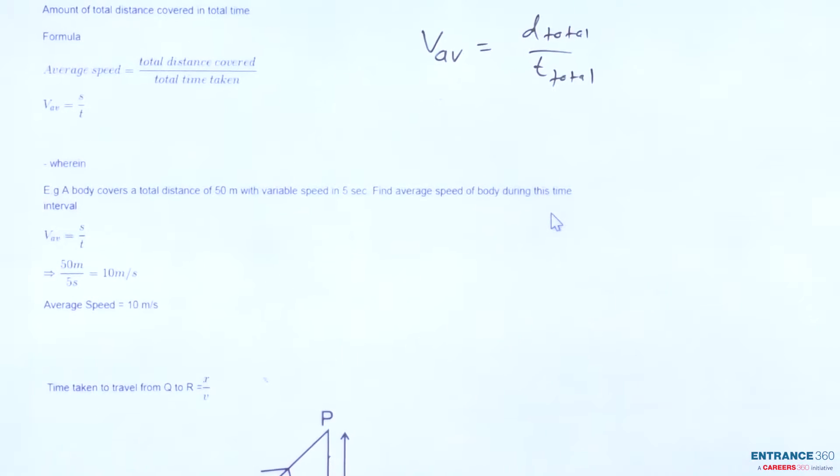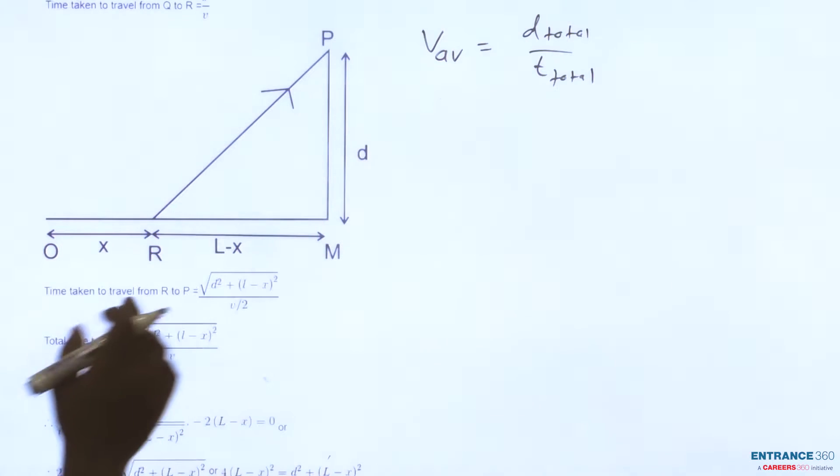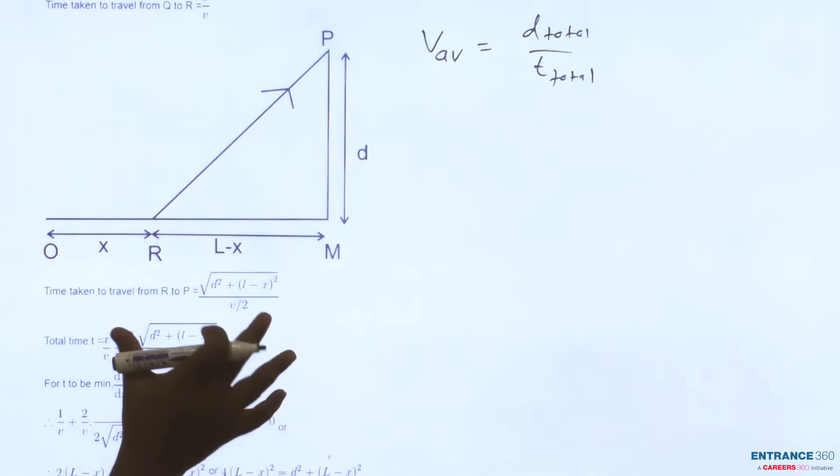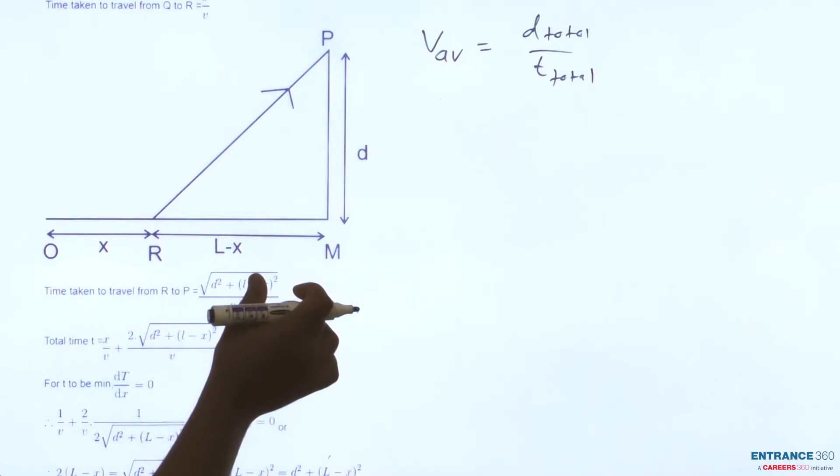With the help of this formula we will find the answer. In this figure let's assume distance QR is X and the total distance is L. So let's assume this distance as L minus X.